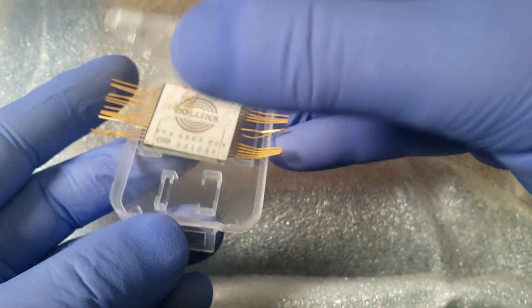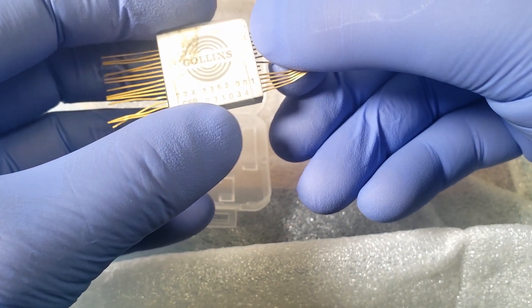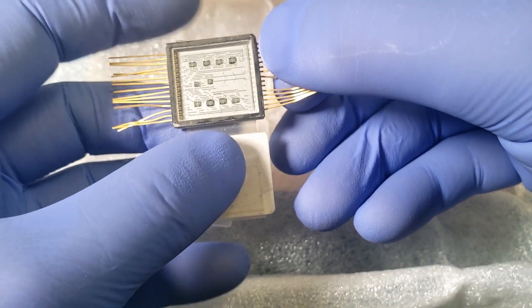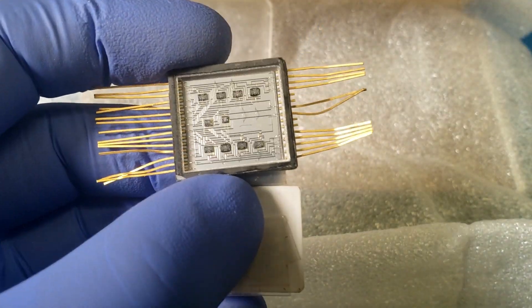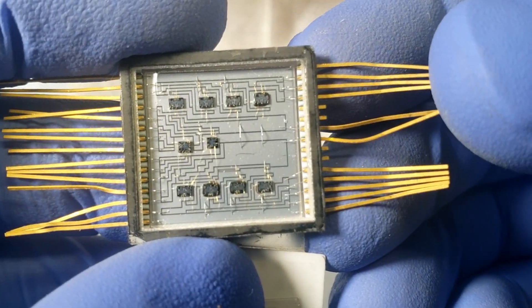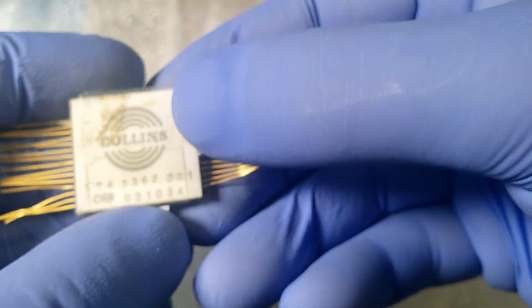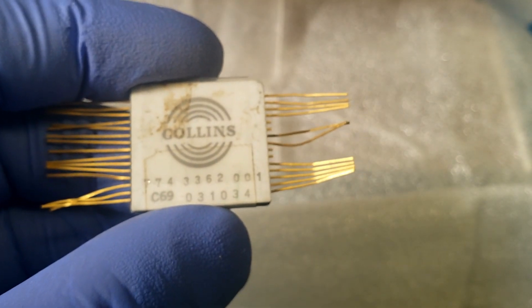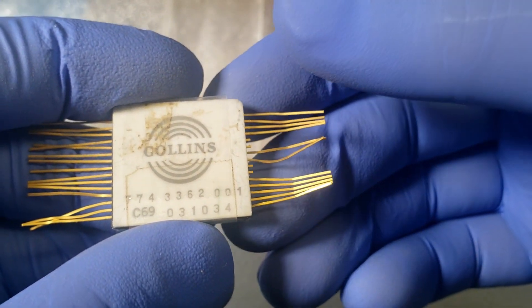Okay, somebody out there already knows what this is. I don't know what this is. What is this? Whoa! Oh, this is some like really old, like really really old integrated circuit. What's it say on the front of that again? Collins seven seven four three three six, two zero zero one.